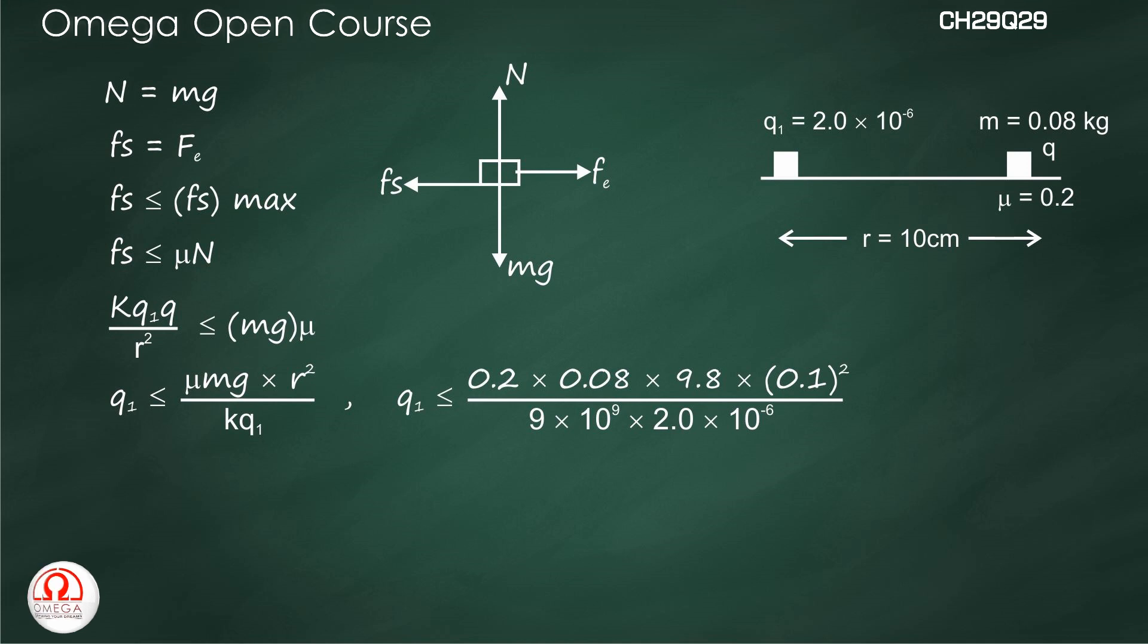Substituting the values: Q ≤ (0.2 × 0.08 × 9.8 × (0.1)²)/(9 × 10⁹ × 2 × 10⁻⁶). Solving this, we get Q ≤ 8.71 × 10⁻⁸ coulombs.